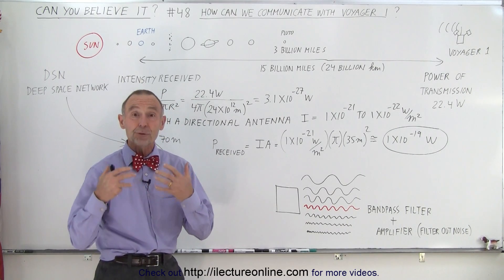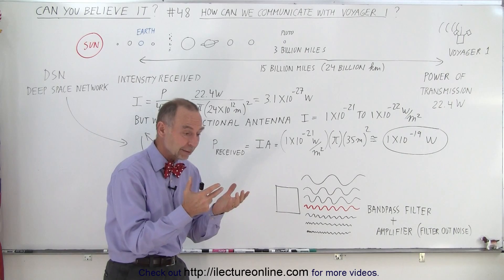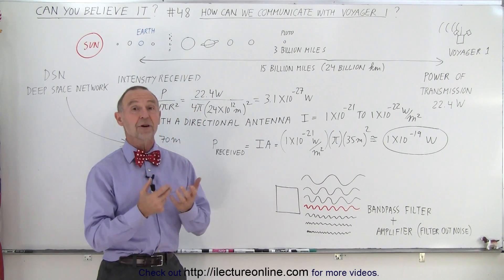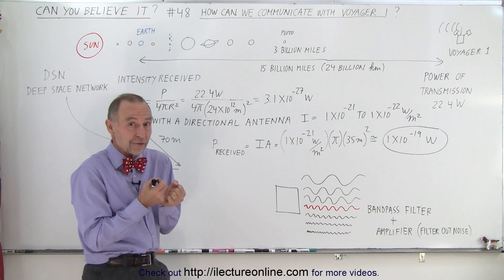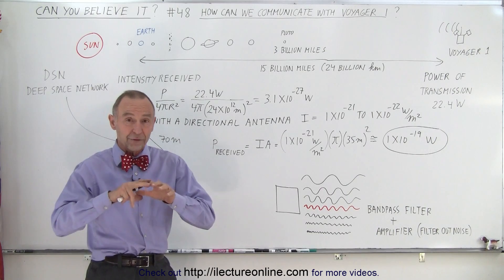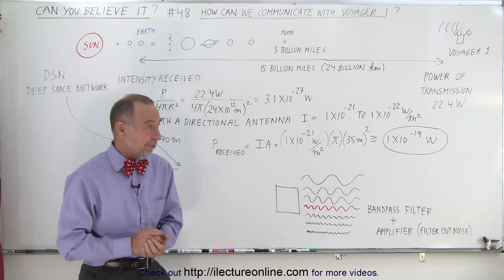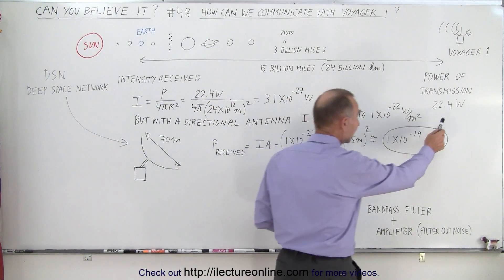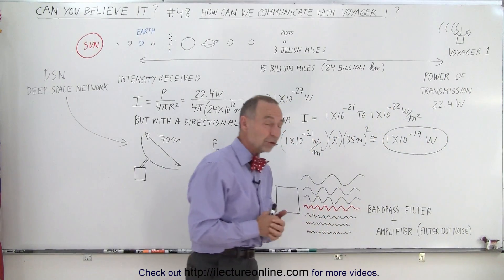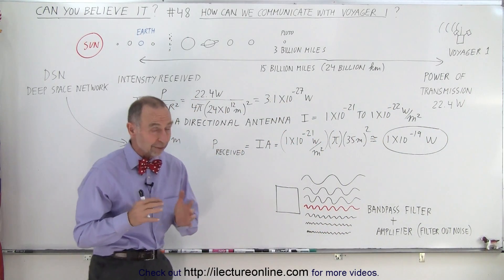The question is how are we able to communicate with that satellite when it's that far away and it cannot give a very strong signal towards us because it has a very small power source. As a matter of fact, it is able to give us a signal with a strength of 22.4 watts, which isn't very much.